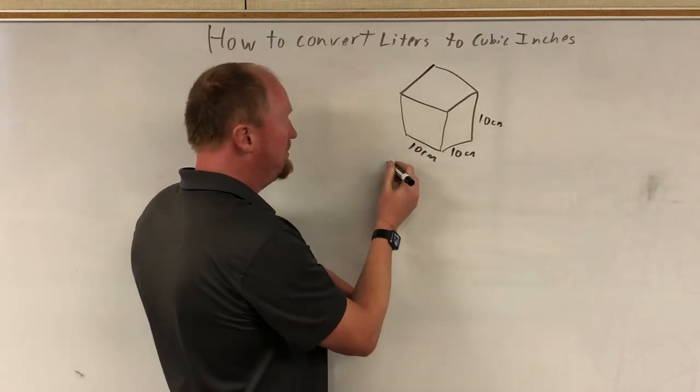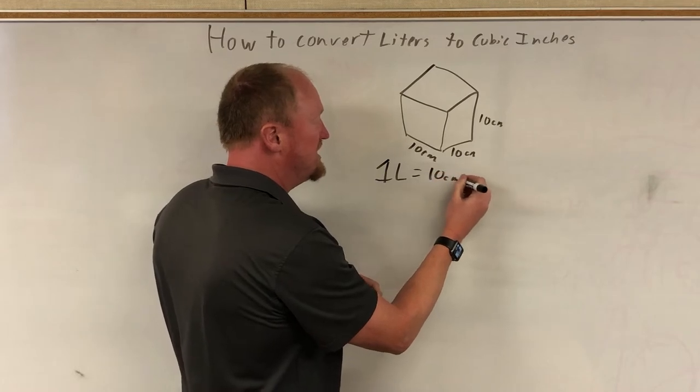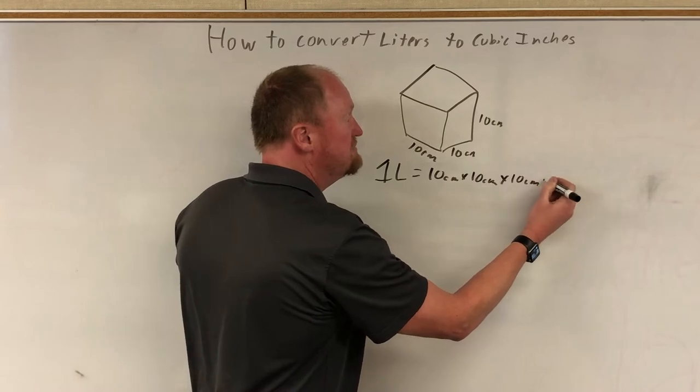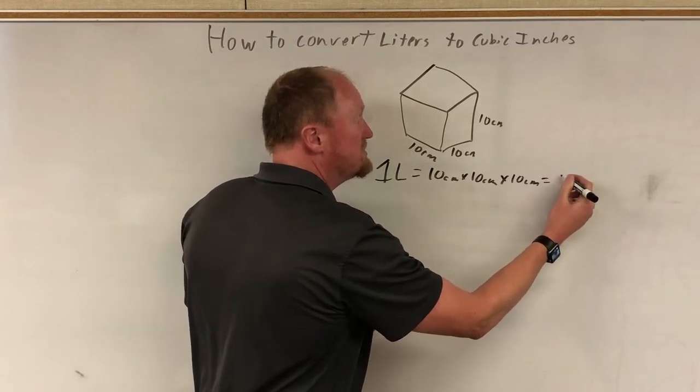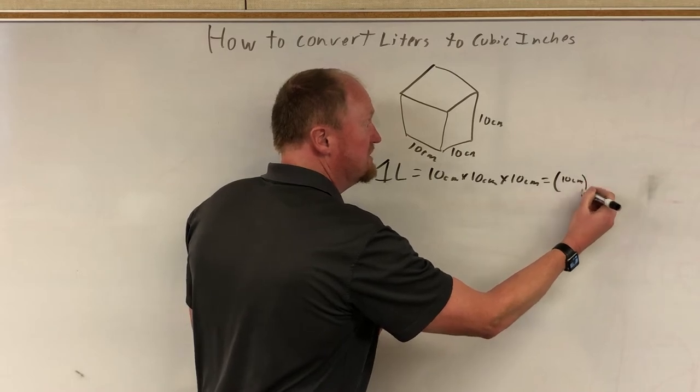So if you want to look at it, 1 liter is equal to 10 cm times 10 cm times 10 centimeters, or in other words, 10 centimeters cubed.